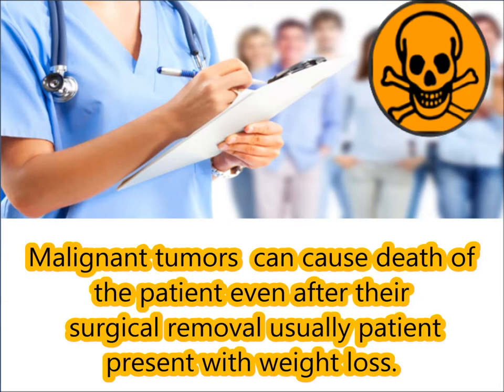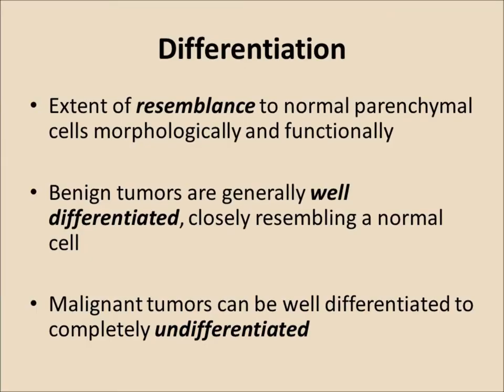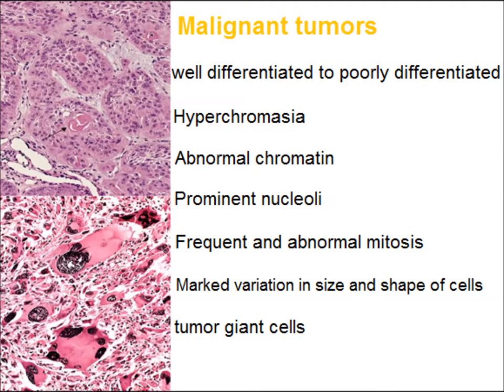Patients usually present with weight loss. Tumors can be well differentiated to undifferentiated. Well differentiated means resemblance to the normal parenchymal cells. Microscopically, malignant tumors may be well differentiated to poorly differentiated and may show hyperchromasia, abnormal chromatin pattern, prominent nucleoli, frequent and abnormal mitosis, and marked variation in size and shape of cells and tumor cells.